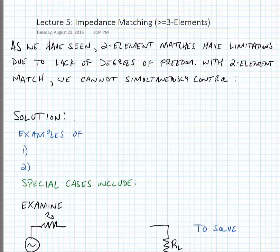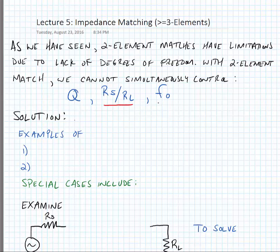The primary concern we had with a two element match was that we couldn't simultaneously control the quality factor Q, the transformation ratio RS over RL, and the frequency of resonance all at the same time. Typically we're forced to control two of these. Transformation ratio and frequency of operation are necessary conditions, so we have to sacrifice Q with a two element matching network.